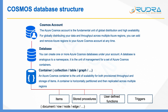In turn, a container can contain items. An item can be called a document, row, node, edge, or something else based on the type of database you go with — basically the type of API you choose, whether it is MongoDB, Cassandra, or something else. Based on that, the container and item will be named differently. A container can also contain stored procedures, user-defined functions, and triggers. This is how the Cosmos database structure looks.